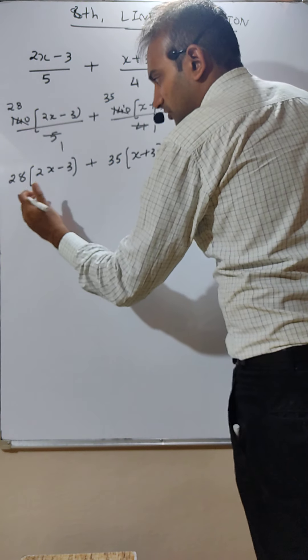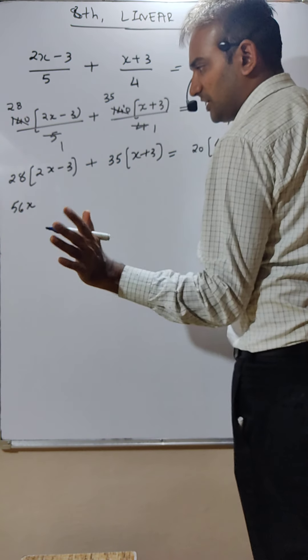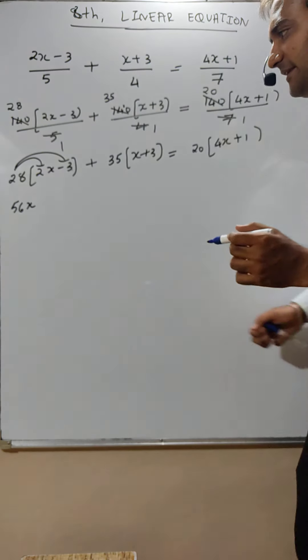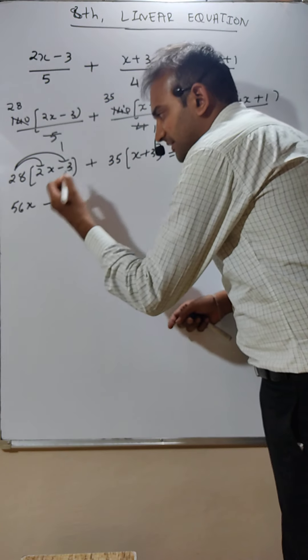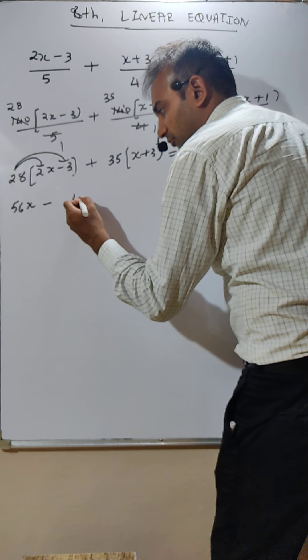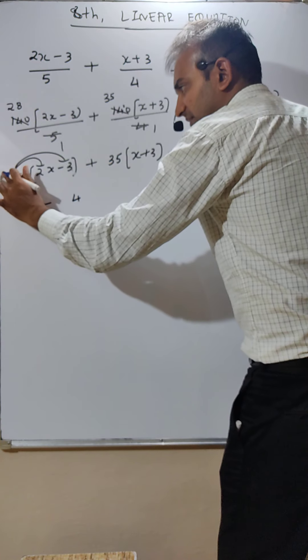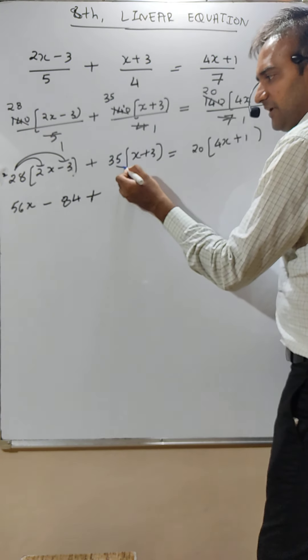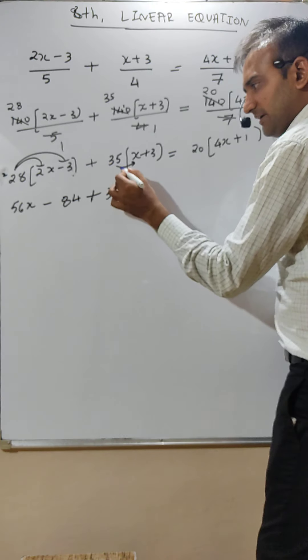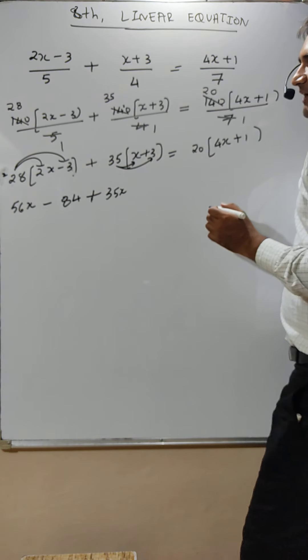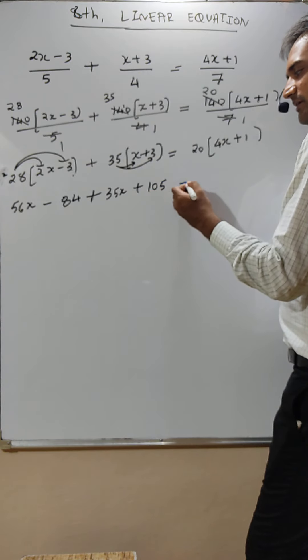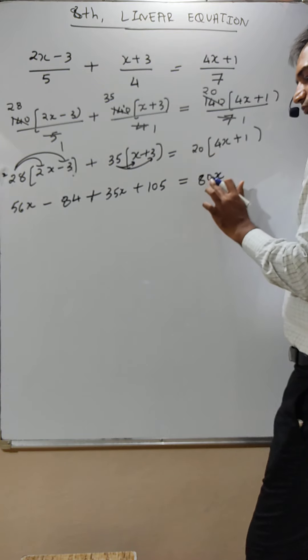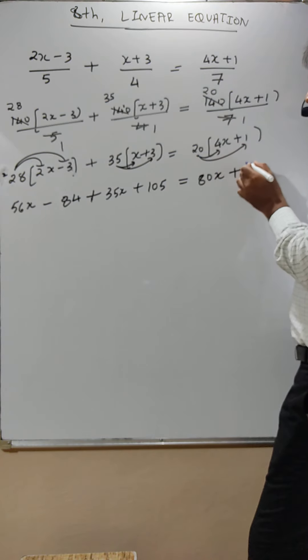Now you multiply. 28 into 2, 56x. Just see here how I am doing. This into this, 28 into 3, but which sign? Minus. So 8 threes are 24, 3 twos are 6, 7 or 8, 84. Plus 35 into x is 35x, 35 into 3 is 105, is equal to 20 into 4x is 80x plus 20 into 1 is 20.